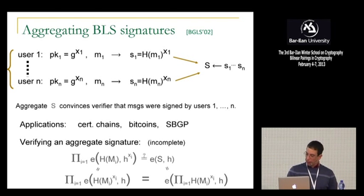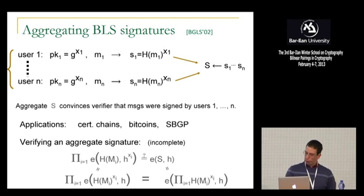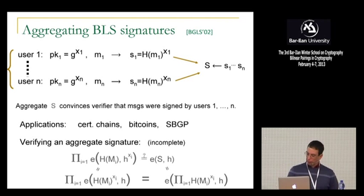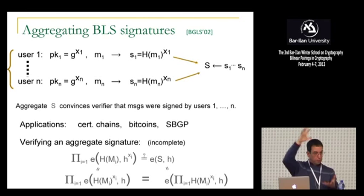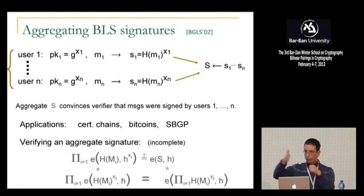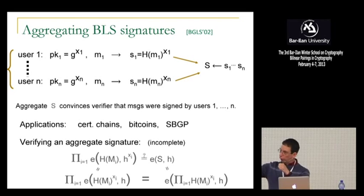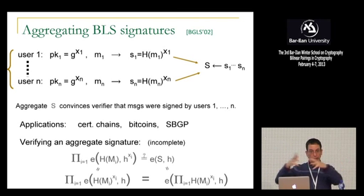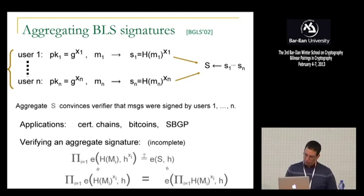And how do we do this compression? All we do is we take and multiply all the signatures together. This is something that we haven't seen in discrete log-based schemes, but is possible in bilinear settings. Basically, the aggregate S — this one single value — is in fact enough to convince a verifier that all messages were signed by all users. This is useful in a lot of settings. For example, if you have a certificate chain, a certificate chain has a different signature at every level — you can take all those signatures, compress them into one, and shrink the certificate chain. In Bitcoin, when you move coins from one person to another, you can take all those signatures and compress them into one. And similarly there's a classic protocol called BGP where you can compress signatures as well.